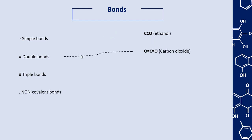To represent double bonds, it is also very intuitive — we use an equal sign. Here we have a carbon dioxide molecule.